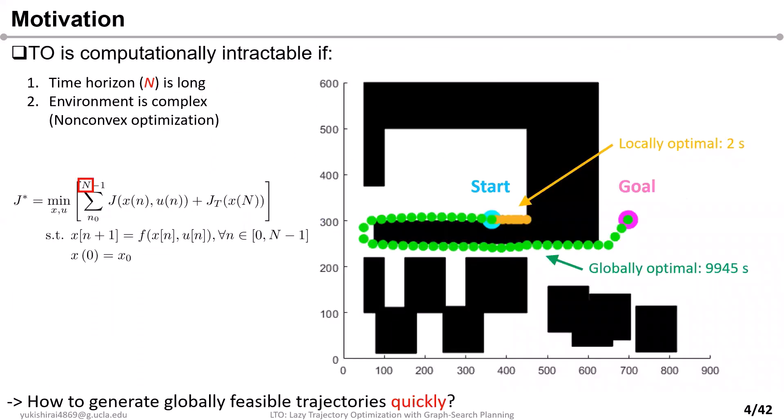The planning time of trajectory optimization can be very long if the time horizon is long or the environment is complex. In this environment, planners need to have a long horizon to generate a globally optimal trajectory, resulting in a long planning time. If the time horizon is short, planners can generate a trajectory quickly but get stuck at the local optimal.